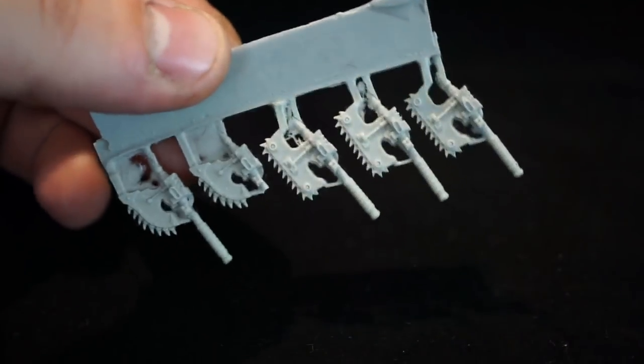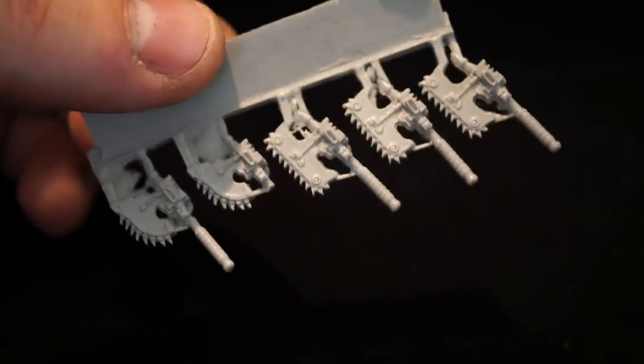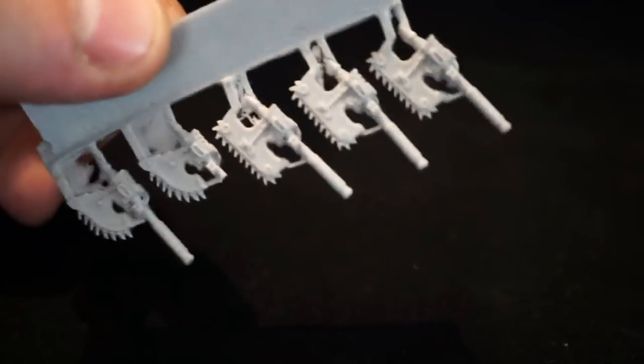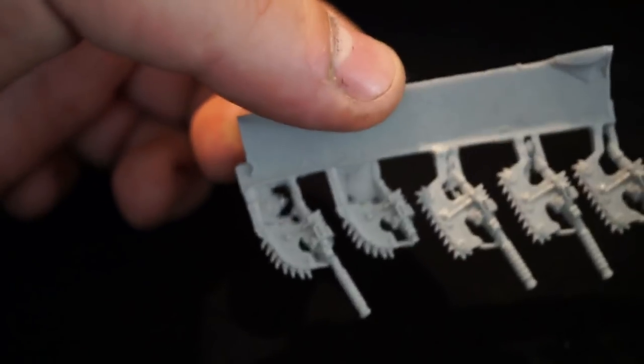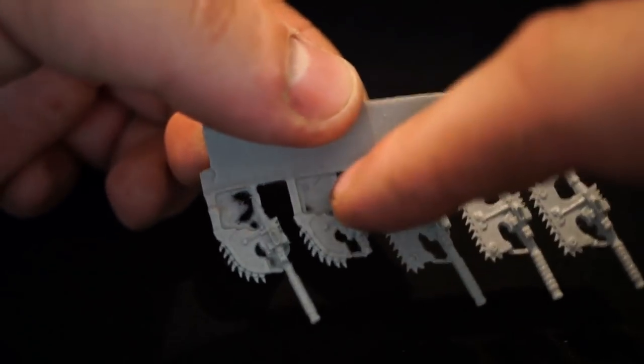So first one I'll start off with is some Forge World chain axes. There you go, that's how they come. Granted this should probably have a handle on it, but this is quite old. This is from an old project of mine, so it's a little bit damaged. But you can see it's still attached to the gate.